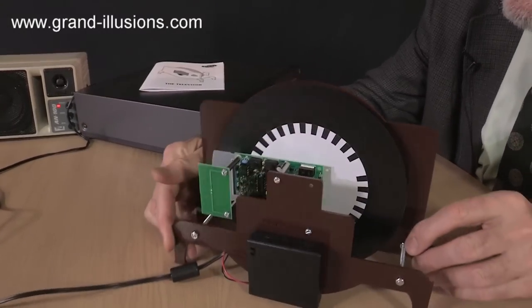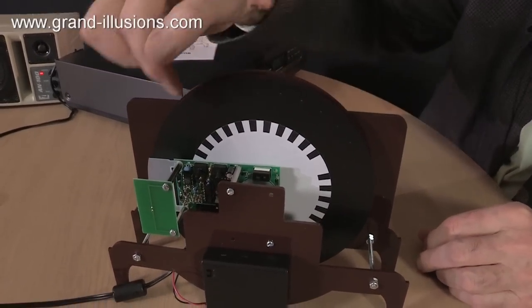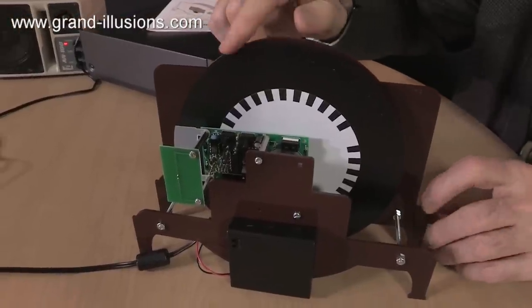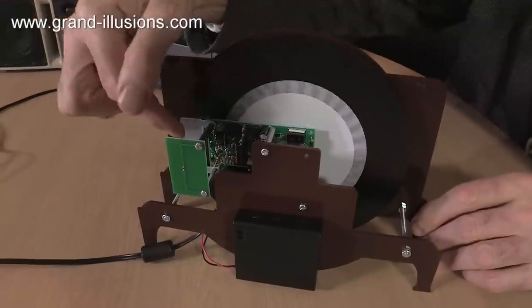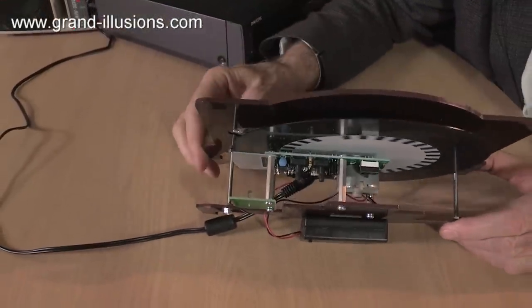On the back you can see the mechanism is just a wheel which turns around, a disc, and it's got little tiny holes in it. You can hardly see those. When it turns around there's a light here shining through into the viewing window.